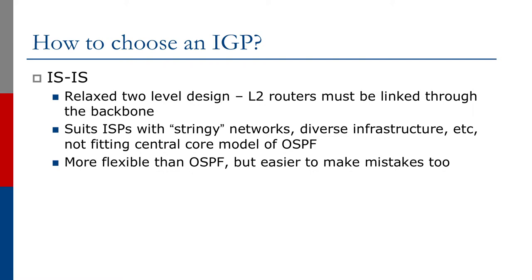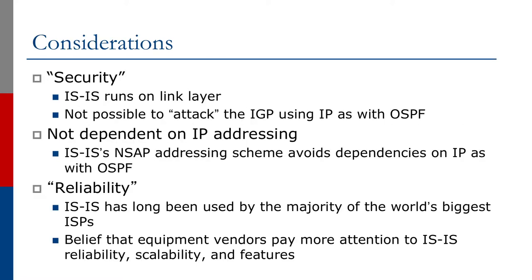IS-IS is much more flexible than OSPF as well, but can be easier to make mistakes also. There are some other considerations. Some people claim IS-IS is more secure. IS-IS runs on the data link layer, so therefore it's not possible to attack the IGP using IP as it is with OSPF.